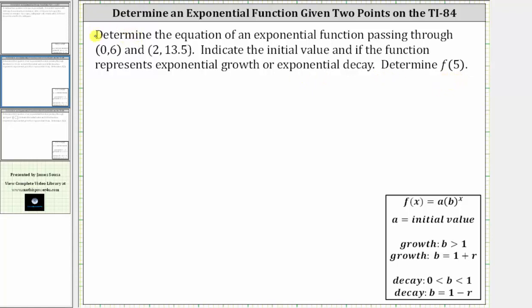Notice how the first ordered pair is 0 comma 6, and since 6 is the output when the input is 0, we should recognize that 6 is the initial value or the value of a.